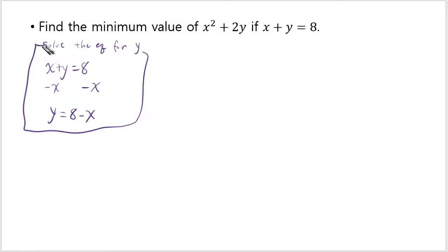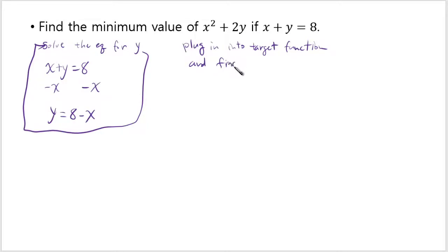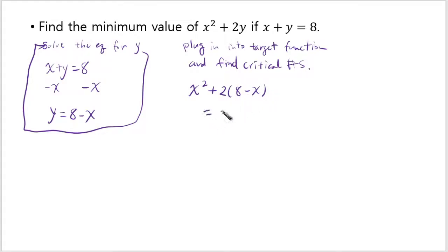That's step one. Then step two is to plug into the target function and find the critical numbers. We have y equals 8 minus x, so we plug it in. We get x squared plus 2 times (8 minus x), which equals x squared plus 16 minus 2x.